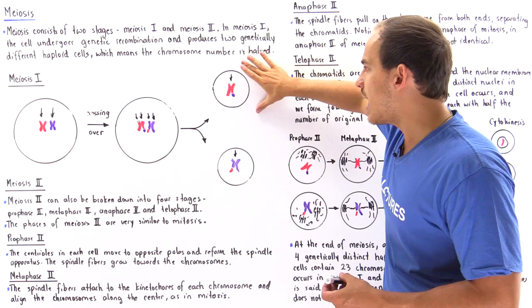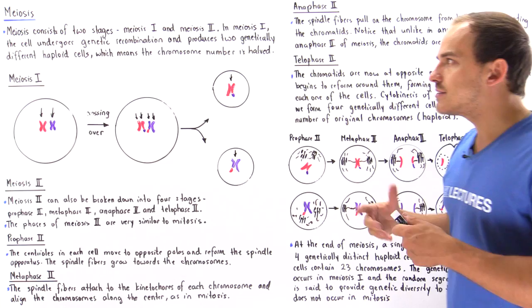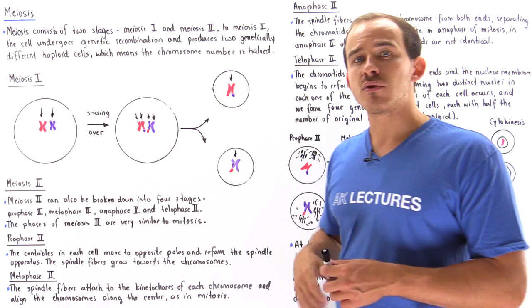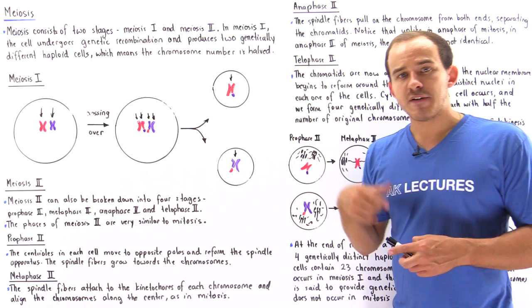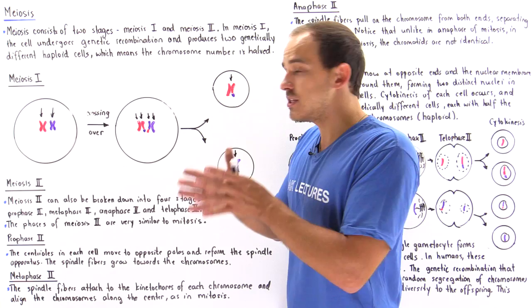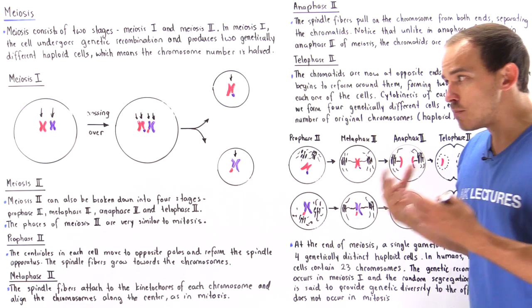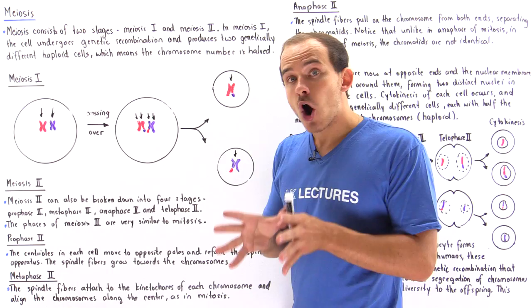Now let's move on to the second stage of meiosis known as meiosis 2. Just like mitosis and meiosis 1 are broken down into four stages, meiosis 2 can also be broken down into four phases: prophase 2, metaphase 2, anaphase 2, and telophase 2 — plus cytokinesis, which is the separation of the cytoplasm and cell membrane. The phases of meiosis 2 are very similar to the phases of mitosis, but there are important differences as we'll see in a moment.